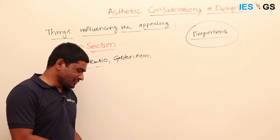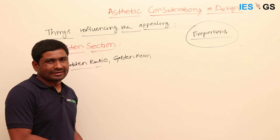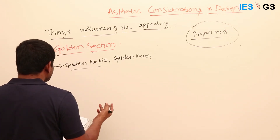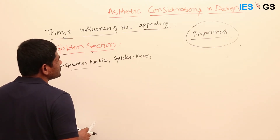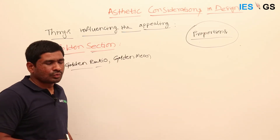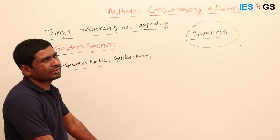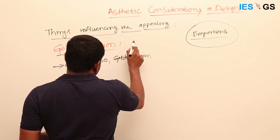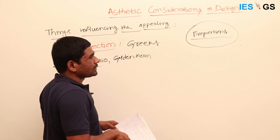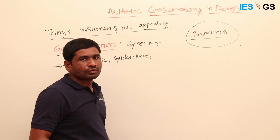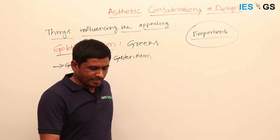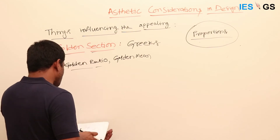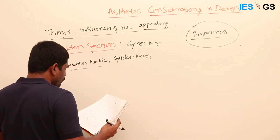First, who discovered or observed the golden section in nature? We always give credit to the people who observed it first, just as we mention a scientist's name. The Greeks discovered this. They observed it and also incorporated it into their house buildings and infrastructure.